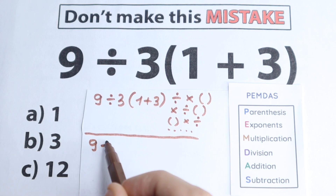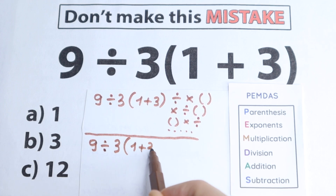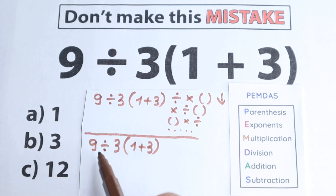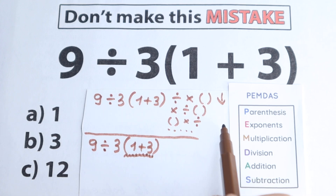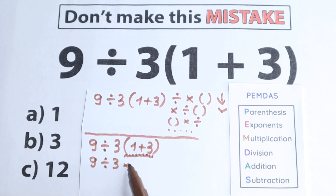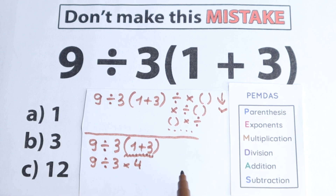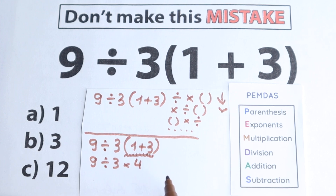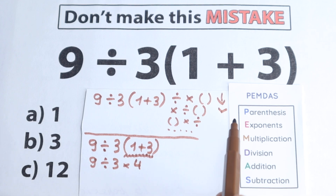So here is our question: 9 divided by 3, and in parentheses we have 1 plus 3. Looking at this through PEMDAS, it works from top to bottom. The first step is parentheses. We find the parentheses: 1 plus 3 is our expression inside. So we solve that — 1 plus 3 equals 4. Now we have 9 divided by 3, times 4. Whatever order of operations you use, parentheses always come first.